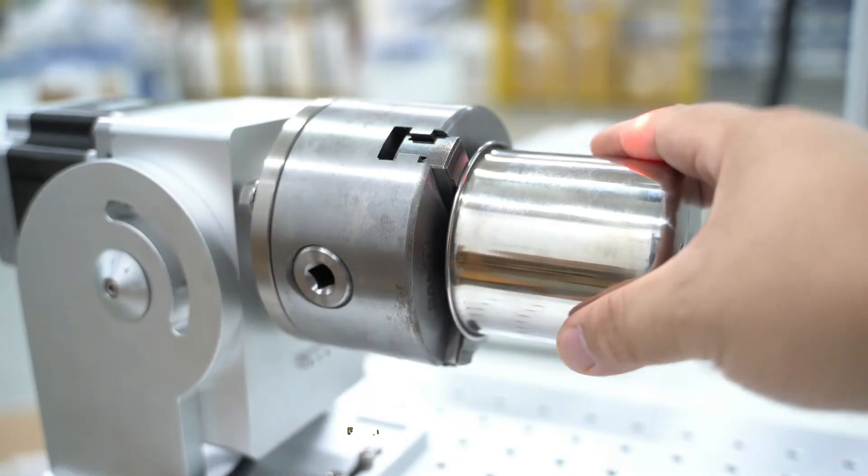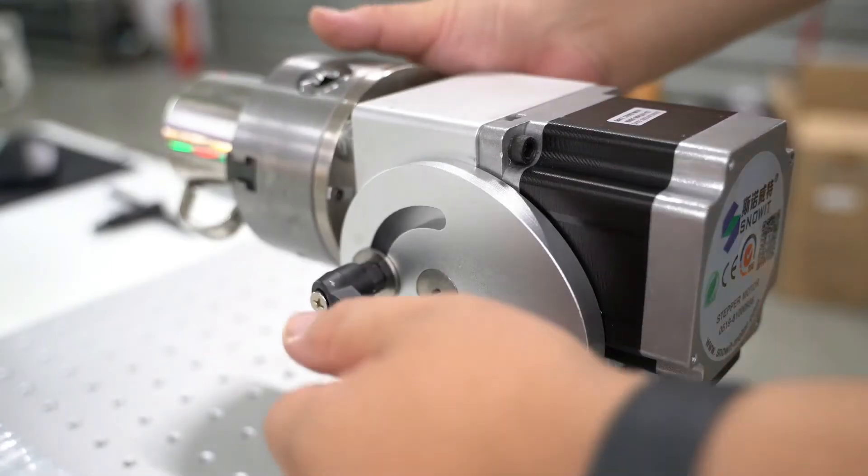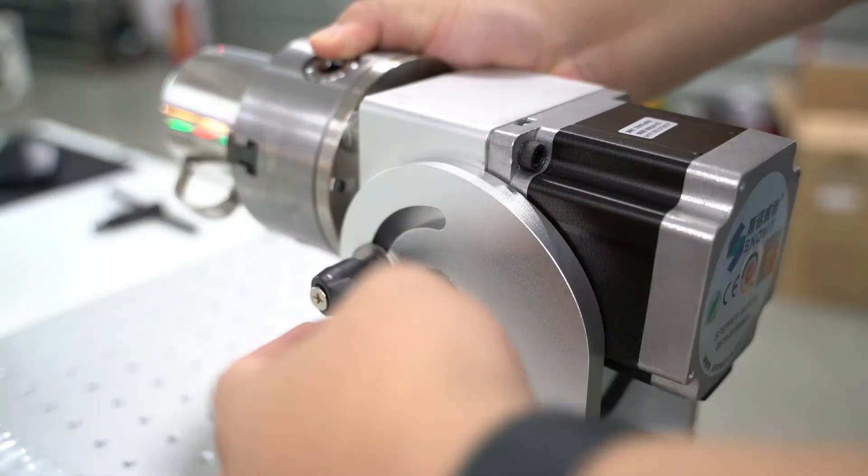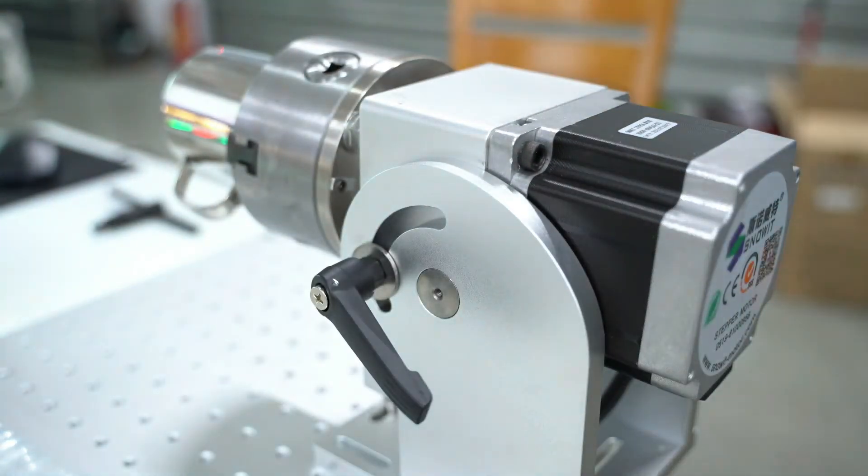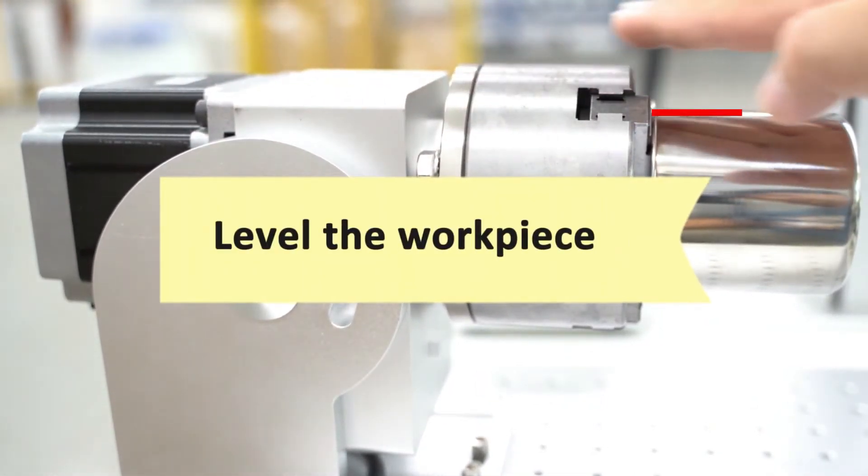Adjust it to fix your cylinder workpiece. After fixing the cup, we can move to the next side of the rotary attachment to adjust the level of the rotating device.